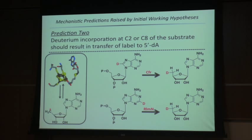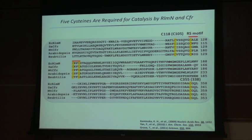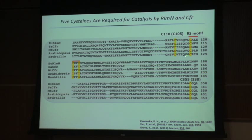Before getting to the mechanistic aspects, there are five cysteines that are absolutely conserved. Whenever cysteines are absolutely conserved, they're typically doing something interesting. Three of those cysteines — marked by the red bar — bind to the 4Fe-4S cluster already discussed. But there are two remaining cysteines: one toward the N-terminal part of the protein and one toward the extreme C-terminal part. These two cysteine residues play very intricate roles in the reaction mechanism.